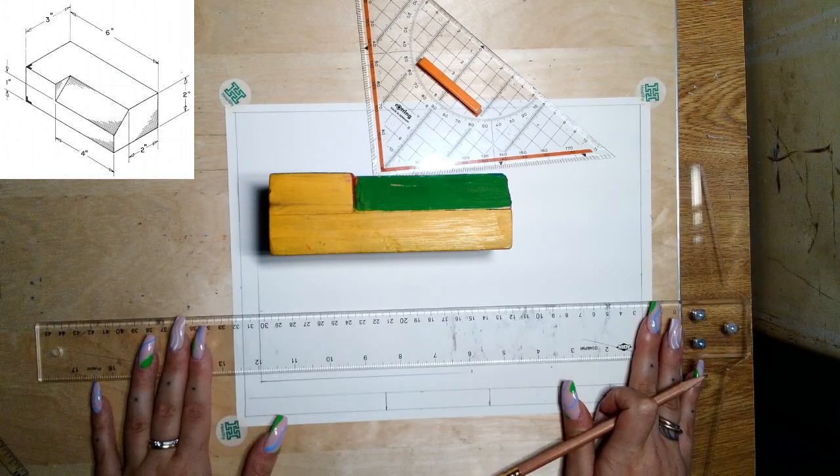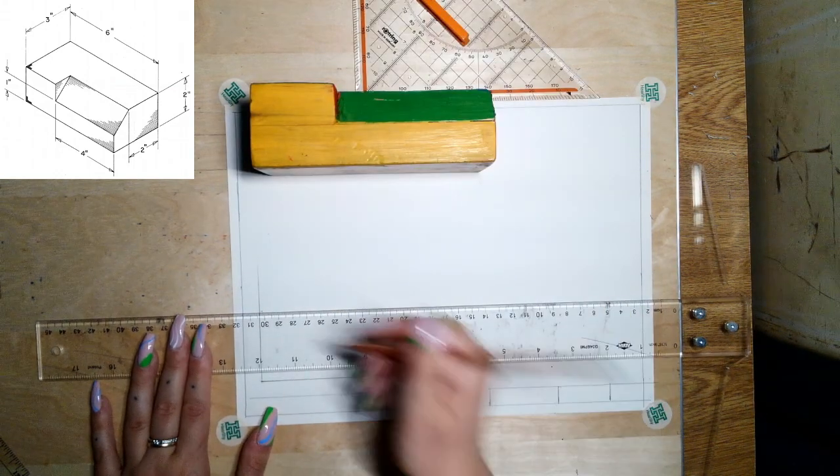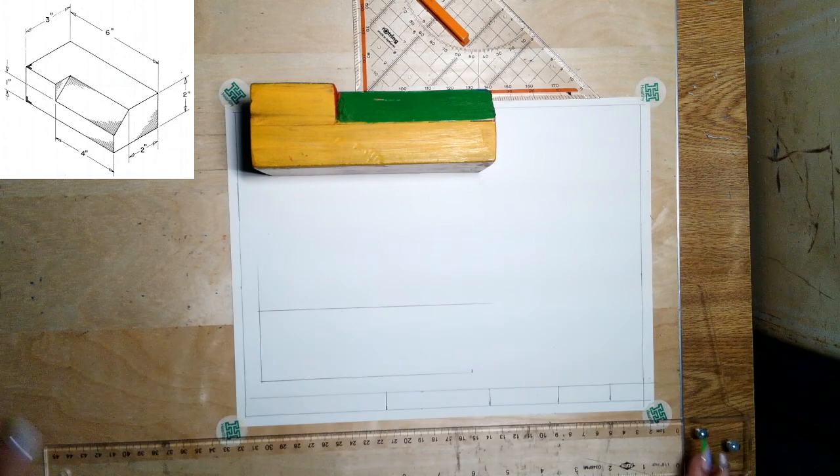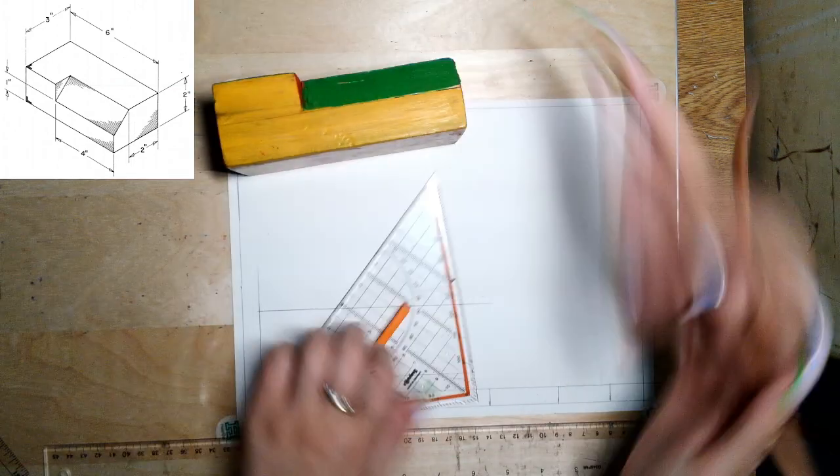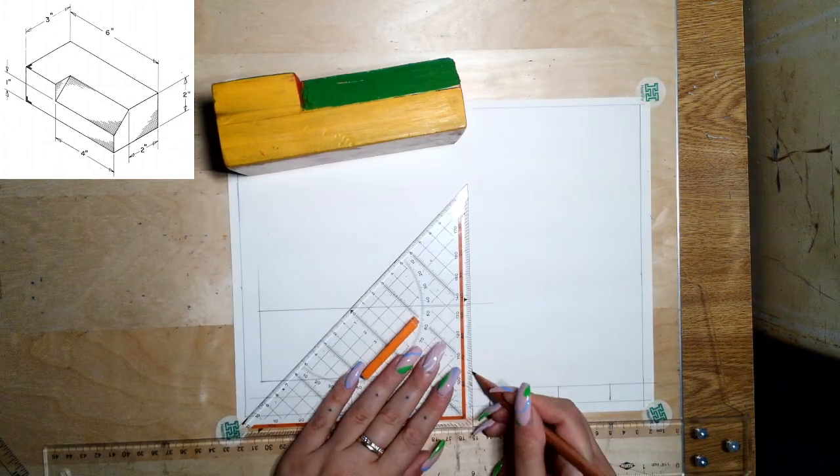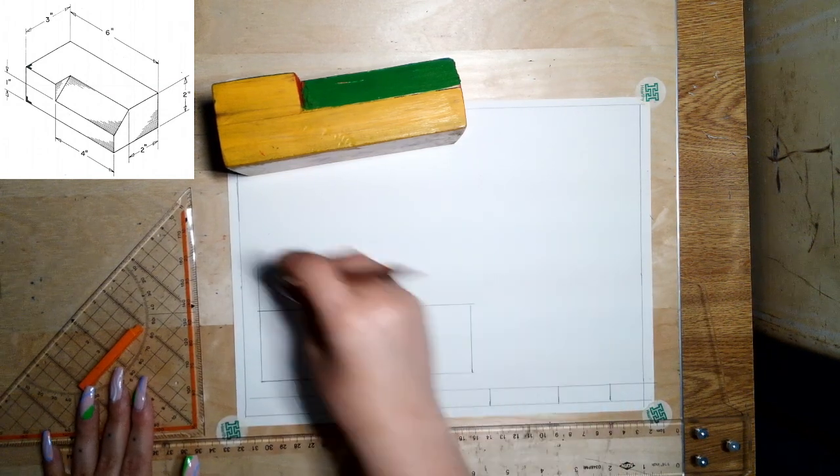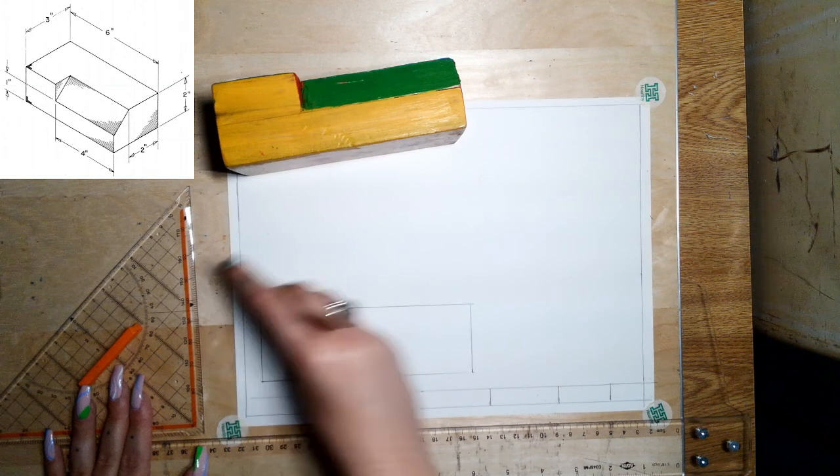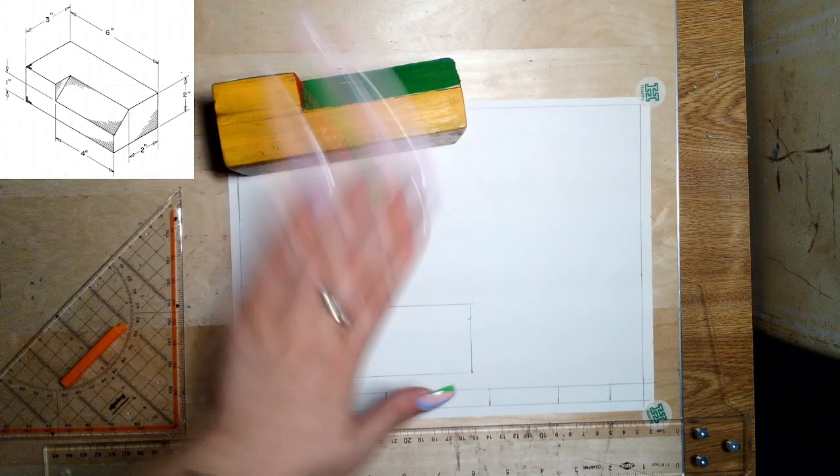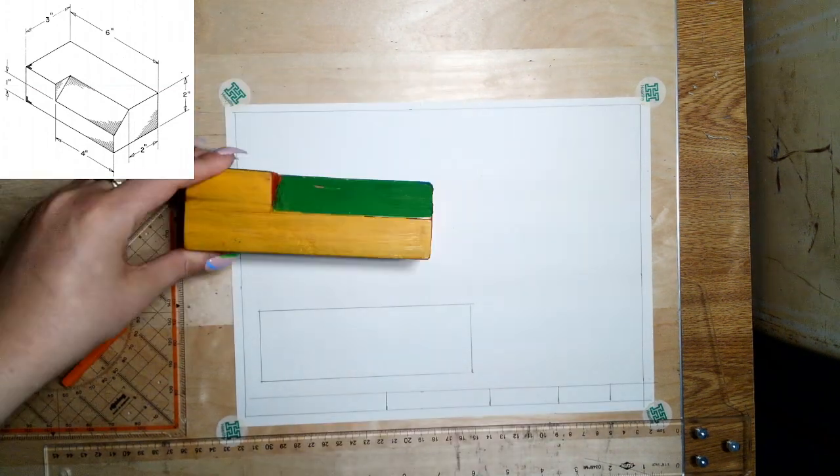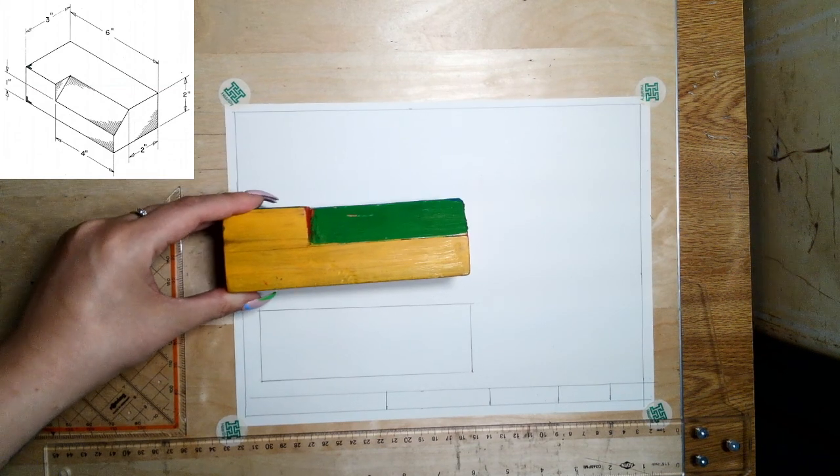After so many years of doing this, I've gotten pretty good at eyeballing measurements. And I'm just going to make just kind of an overall bounding box and just get rid of a little bit of this guide work. So that's the overall height and length of this view.